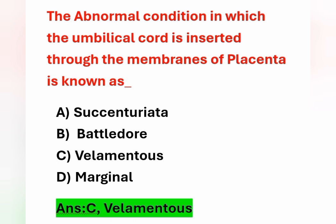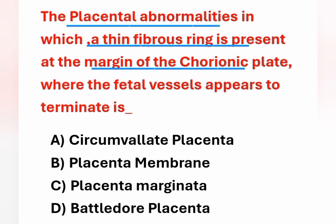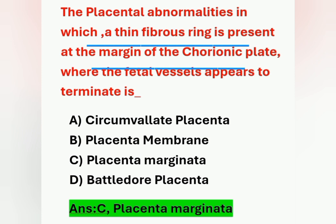Next question: the placental abnormality in which a thin fibrous ring is present at the margin of the chorionic plate where the fetal vessels appear to terminate is called? Options: A) Circumvallate placenta, B) Placenta membranacea, C) Placenta marginata, D) Battledore placenta. The correct answer is option C — placenta marginata, where a thin fibrous ring is present at the margin of the chorionic plate.